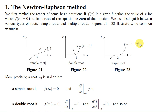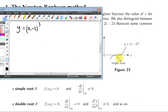Here's an example of a function that has a triple root. We can clearly see that at x = 2, y is 0. What about dy/dx? Applying the chain rule, dy/dx at x = 2 gives us 0. What about the second derivative?